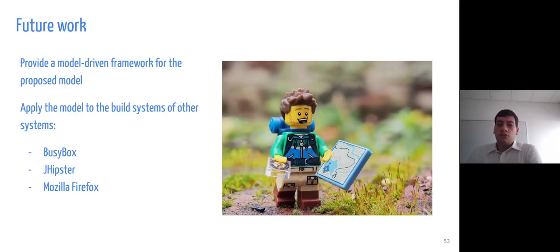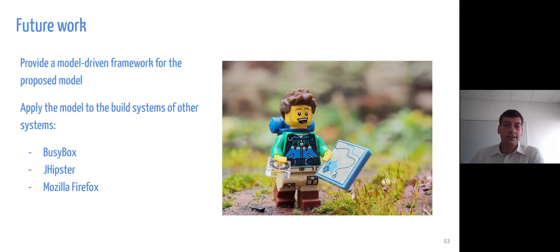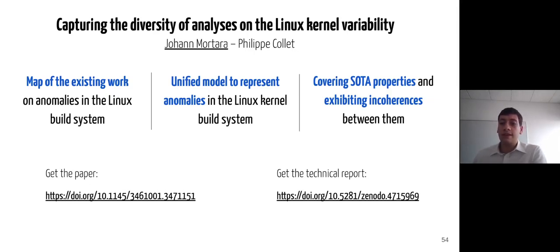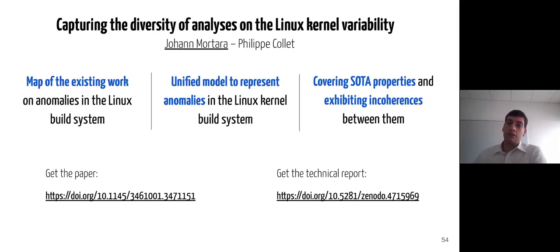Now that we obtained a model that is ready for use, we plan future work to develop a model-driven framework to apply it onto the build systems of other systems, such as BusyBox, Japester, or Mozilla Firefox. To conclude, the existing work on anomalies in the Linux build system offers partial formalisms, and some definitions are not aligned between them, which prevents reuse on other build systems. In this contribution, we built a map of this work and provided a unified model to describe the anomalies in the build system. We instantiated all the definitions from the state-of-the-art and characterized existing incoherences between them.